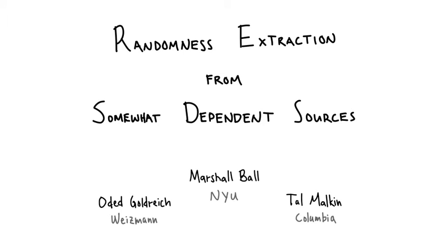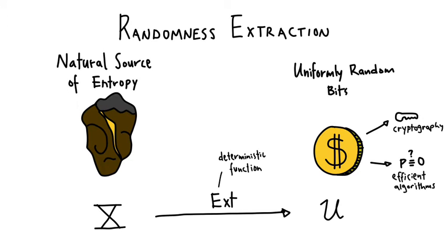Hi, I'm Marshall Ball here to talk to you about randomness extraction from somewhat dependent sources. This is joint work with Odette Kolderreich and Tal Malkin. So what is randomness extraction and why do we care about it? We know that randomness is essential for many, many things in computer science. For any meaningful notion of security in cryptography, randomness is absolutely necessary.